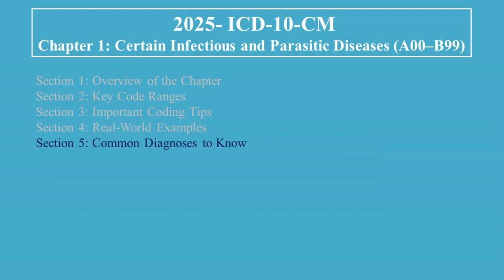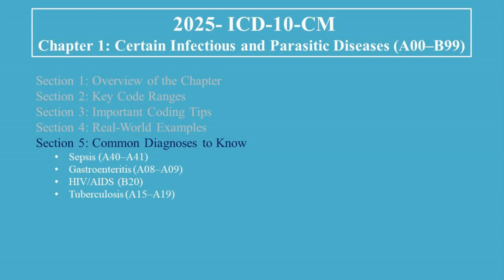Section 5: Common Diagnoses to Know. Here are some frequent conditions from Chapter 1: Sepsis (A40–A41), Gastroenteritis (A08–A09), HIV/AIDS (B20), Tuberculosis (A15–A19), Influenza (B34), and Dengue Fever (A90).